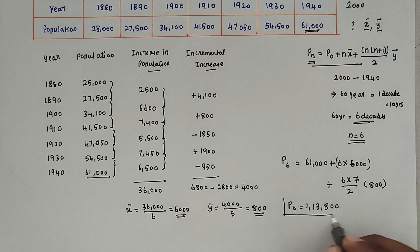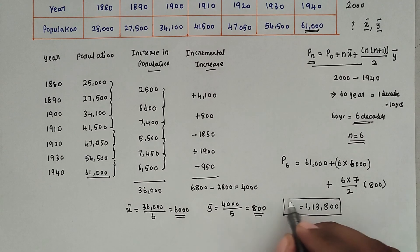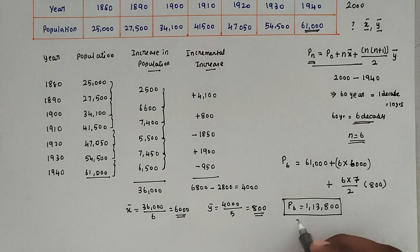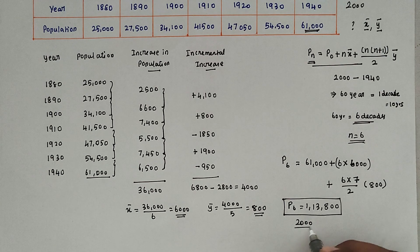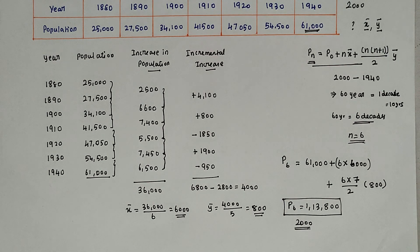This is the final answer — the population at the year 2000 is 1,13,800. This is the incremental increase method for solving population estimation problems. We will see the next problem in the next video. Thank you.